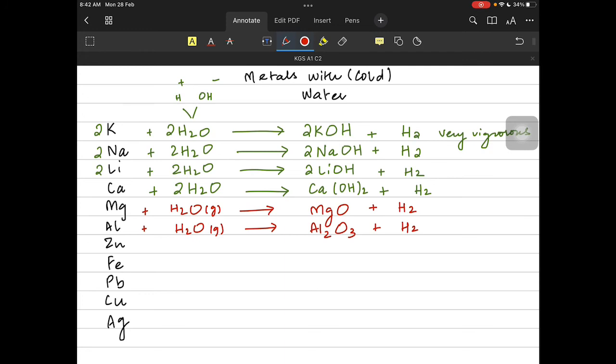With zinc the same reaction happens. Let's balance the aluminum equation first. You put a 3 before the water and that allows three oxygen and six hydrogen atoms and then you balance it by putting a 2 before aluminum. Zinc reacts with steam to make zinc oxide.